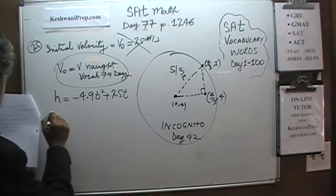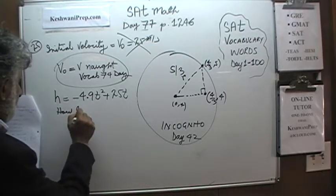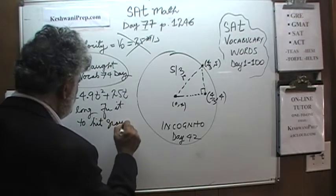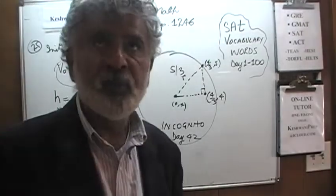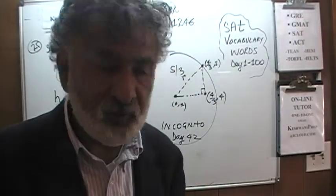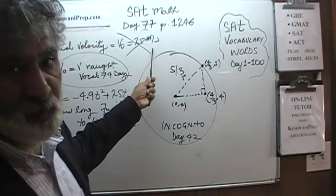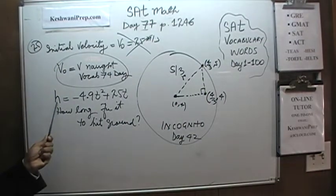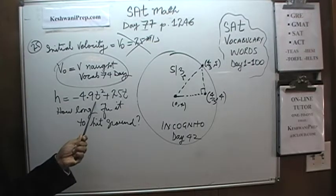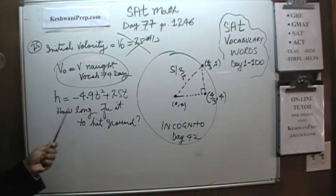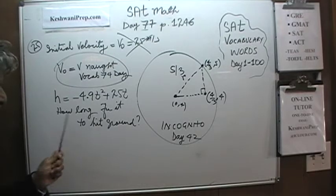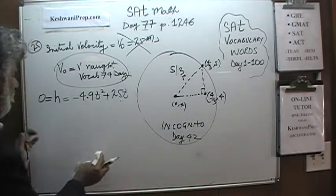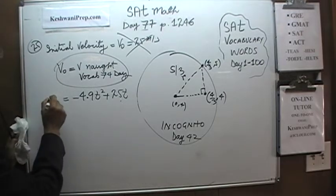The question simply is: how long does it take for the object to hit the ground? When it hits the ground, the height is zero at that point. So that's the equation we are working with: −4.9t² + 25t = 0. We have to solve this equation — in other words, all of this has to equal zero.